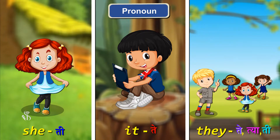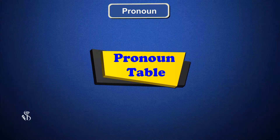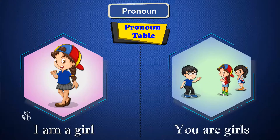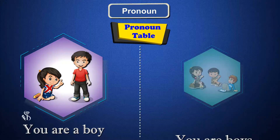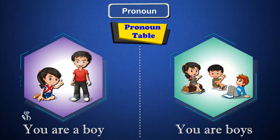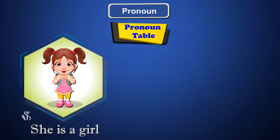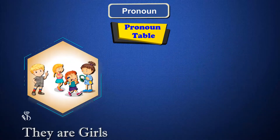Pronouns table: I am a girl. You are girls. You are a boy. You are boys. She is a girl. He is a boy. They are girls. They are boys.